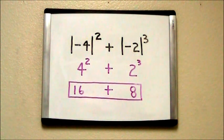So 4 to the second power is 16, 2 to the third power is 8. We add 16 plus 8 to get our final answer of 24.